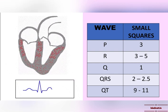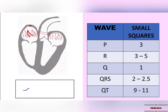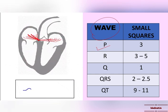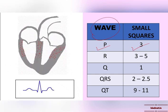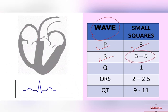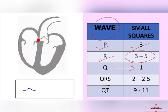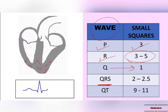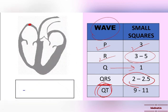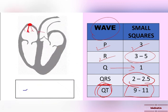Now for a quick review: the P wave should be less than three small squares; the PR interval should be between three to five small squares; the Q wave is about one small square; the QRS should be between two to two-point-five small squares; and the QT should be between nine to eleven small squares.